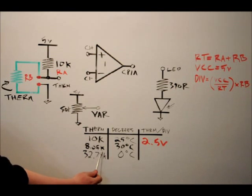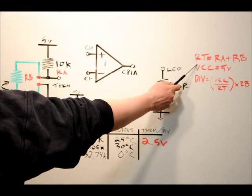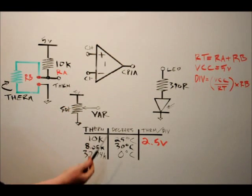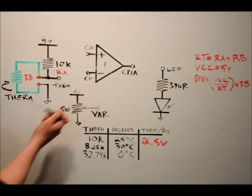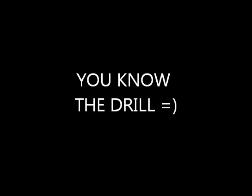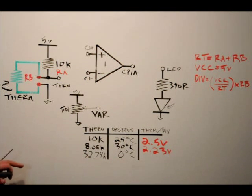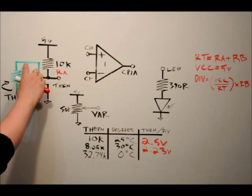At 30 degrees Celsius, the thermistor reads roughly 8.05 kilohms, so VCC is 5 volts and R total is 18.5k — that's 10k plus 8.05k. Pause and use the formula to determine what we'll see at the THRM line. The answer is 2.23 volts.